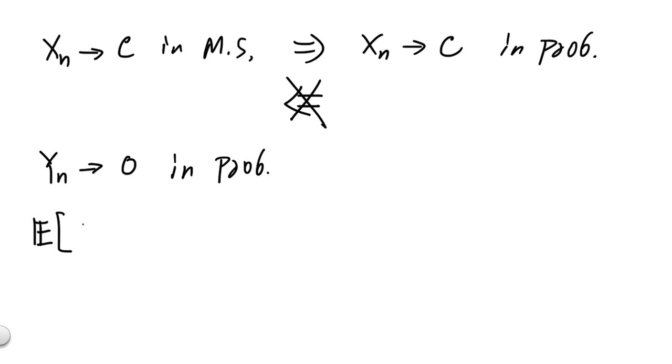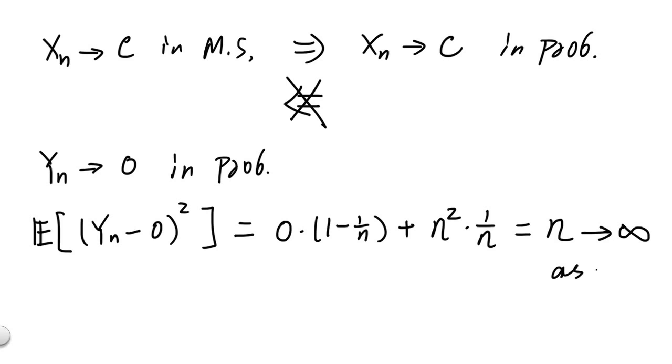we can take the expected value of yn minus 0 squared and see how that goes. Well, the value of this can be computed easily, which is simply 0 if yn is equal to 0 with probability 1 minus 1/n plus n squared when yn takes the value of n and this happens with probability 1 over n. The whole expression evaluates to n which blows up to infinity as n going to infinity.